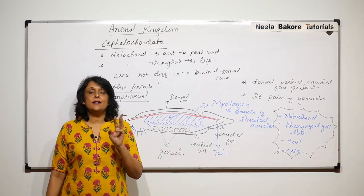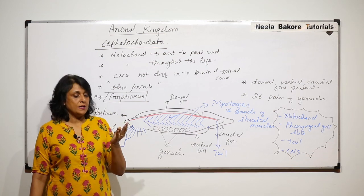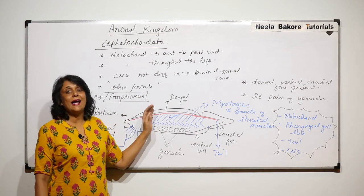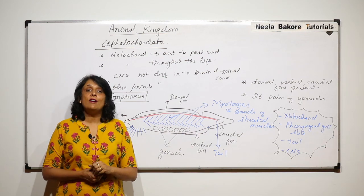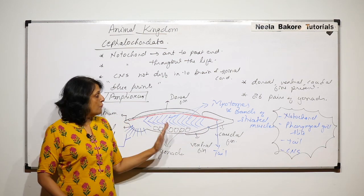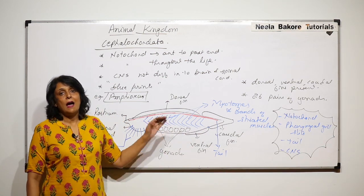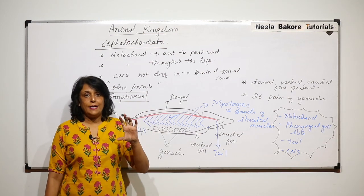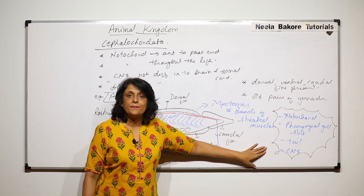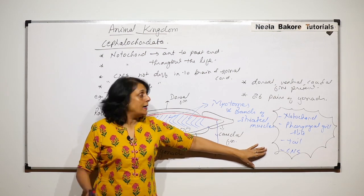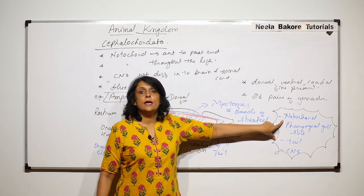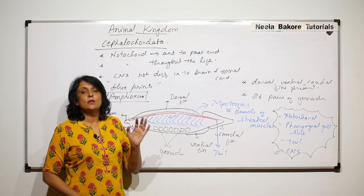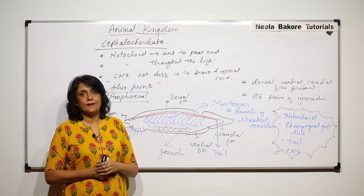Chordata is divided into three subphyla: one is Urochordata, then Cephalochordata, and the third is Vertebrata. In case of Vertebrata, the notochord is replaced by the vertebral column. So the next topic we will discuss is Vertebrata.